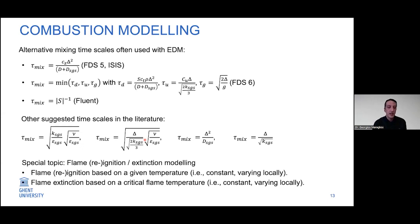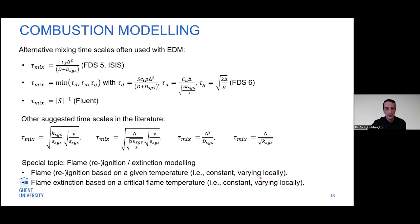When it comes to flame extinction and re-ignition with fast chemistry, what is typically done is to consider a constant temperature for flame ignition and re-ignition. Flame extinction can be based on the concept of a critical flame temperature, which can be constant or varying locally.